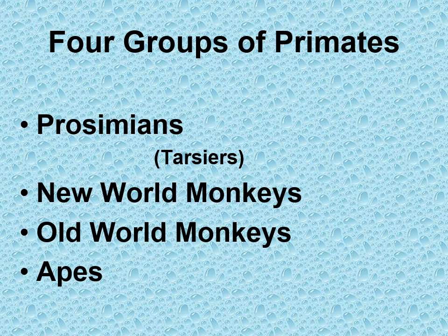Let's start looking at what I'm calling the four groups of primates: prosimians, New World monkeys, Old World monkeys, and apes. Many primatologists consider the tarsiers a fifth group, but I want to focus this discussion on the four groups.